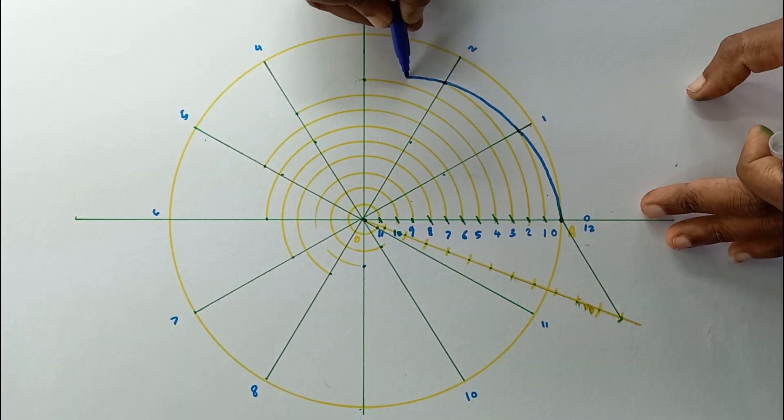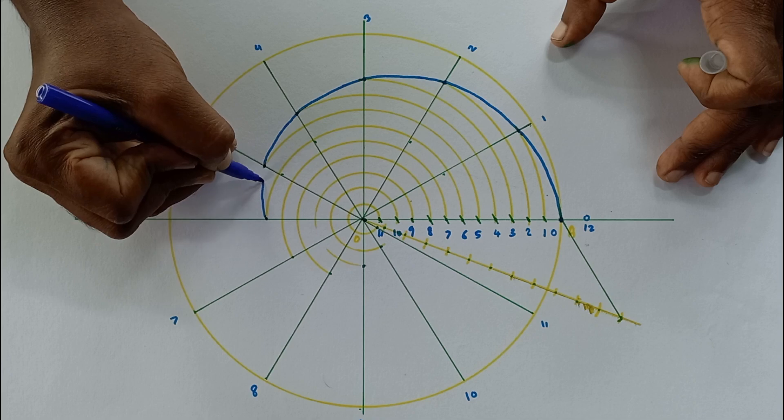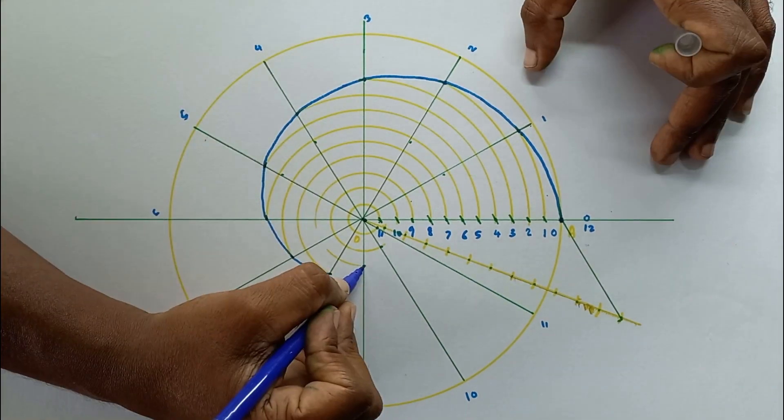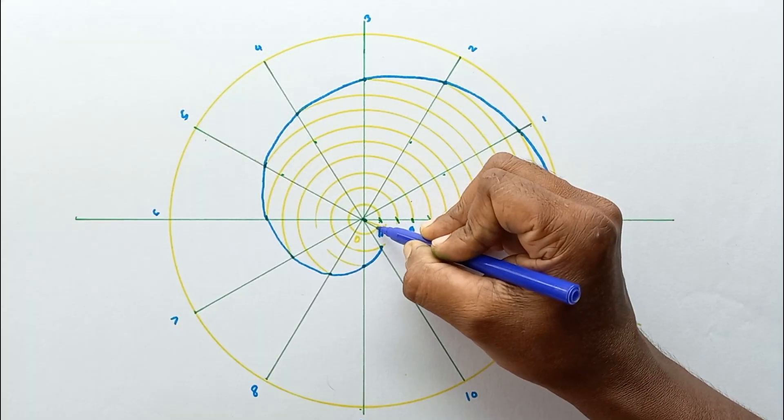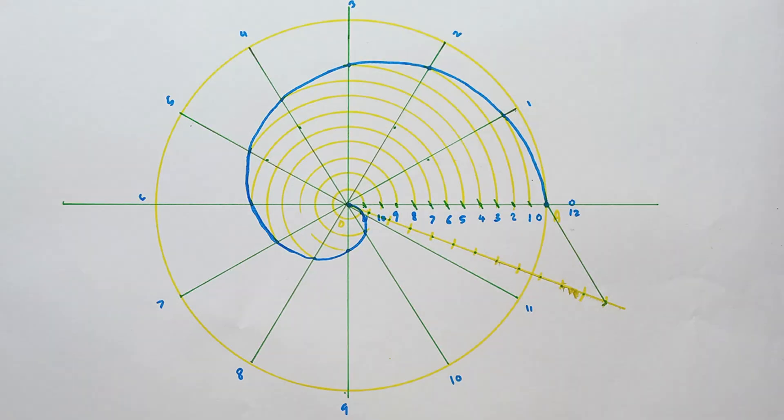In this video I am going to explain how to construct an Archimedean spiral. The Archimedean spiral is the path of a point which moves around a center at uniform angular velocity and at the same time moves away from the center at uniform linear velocity.